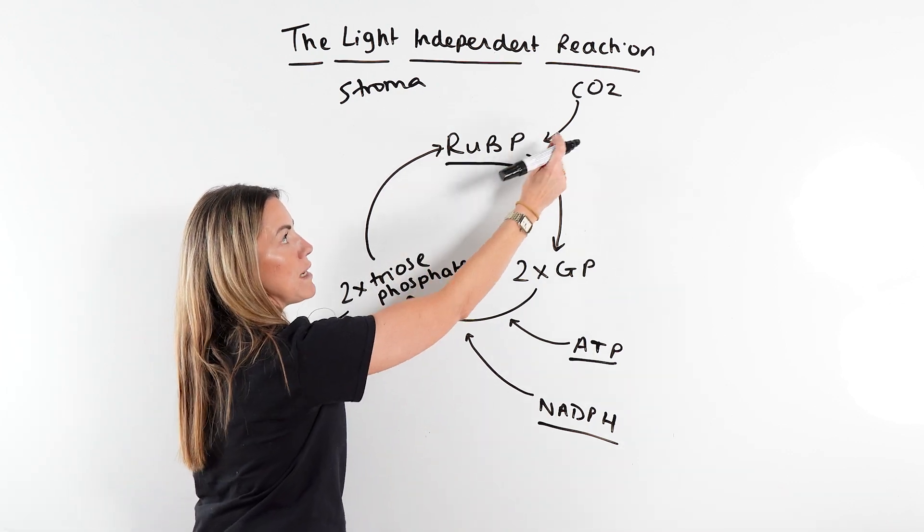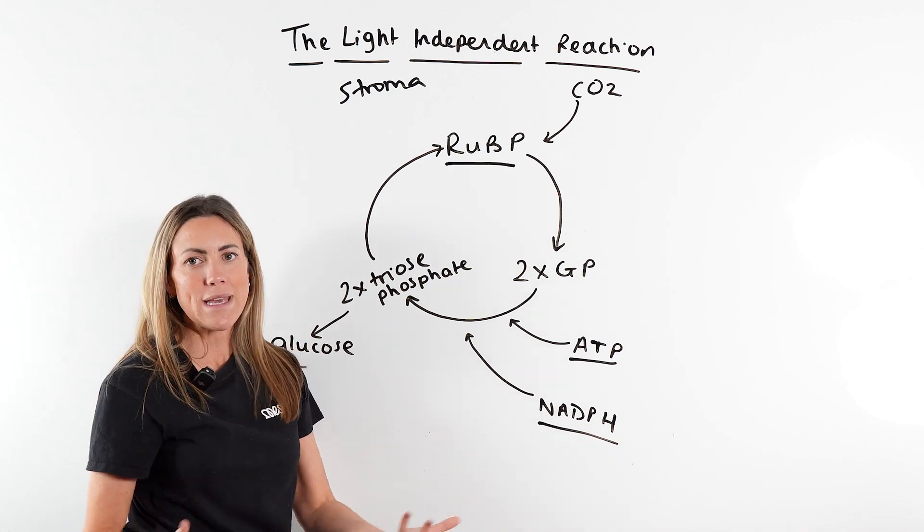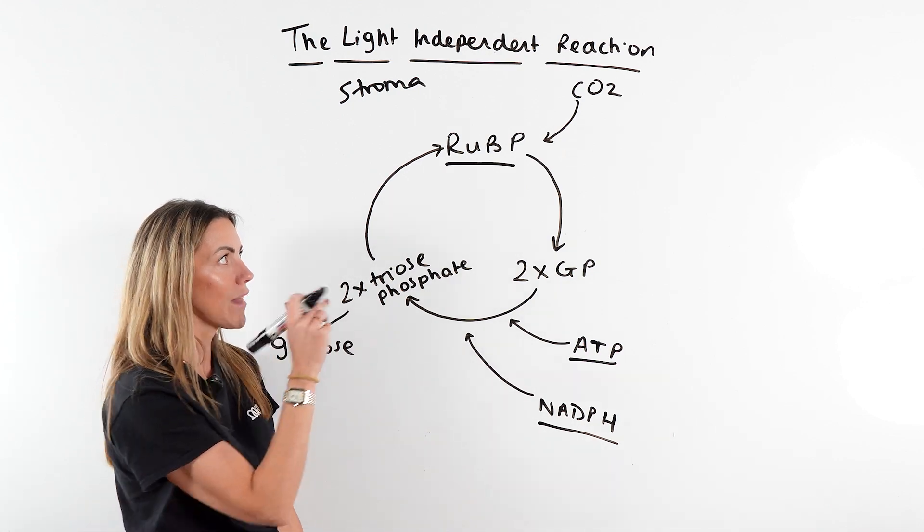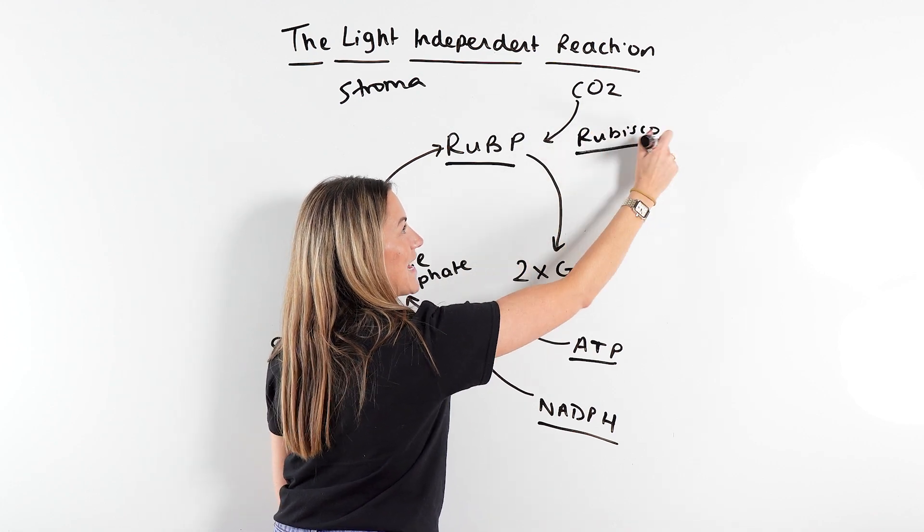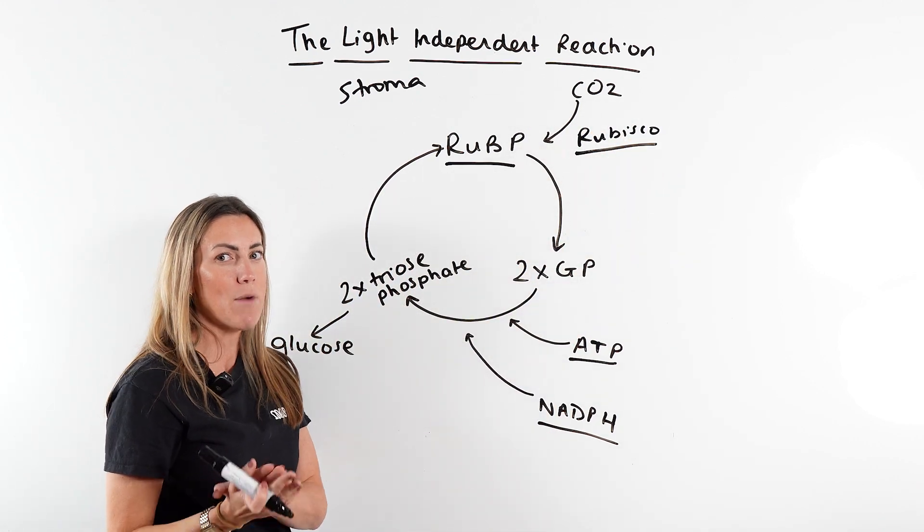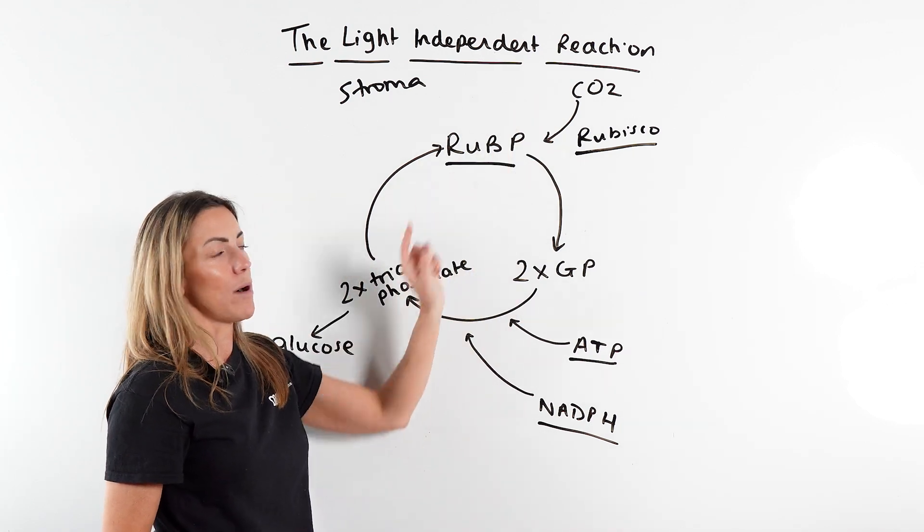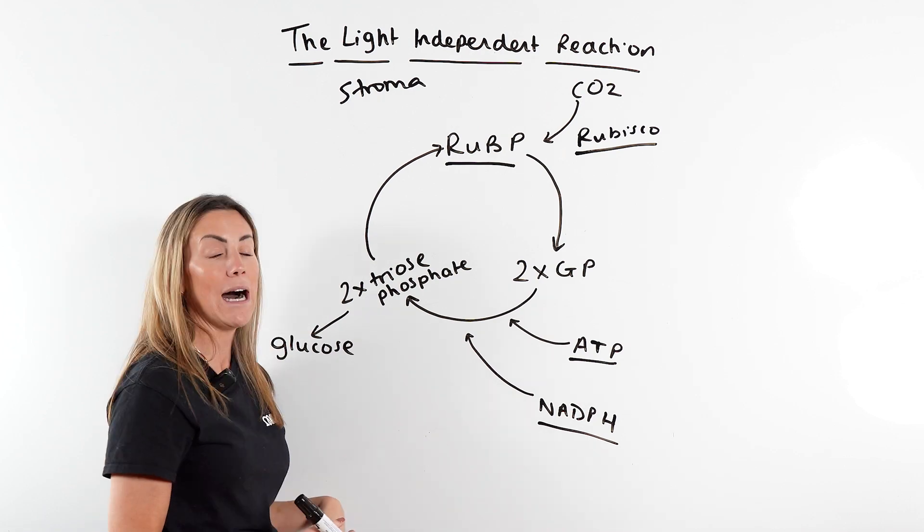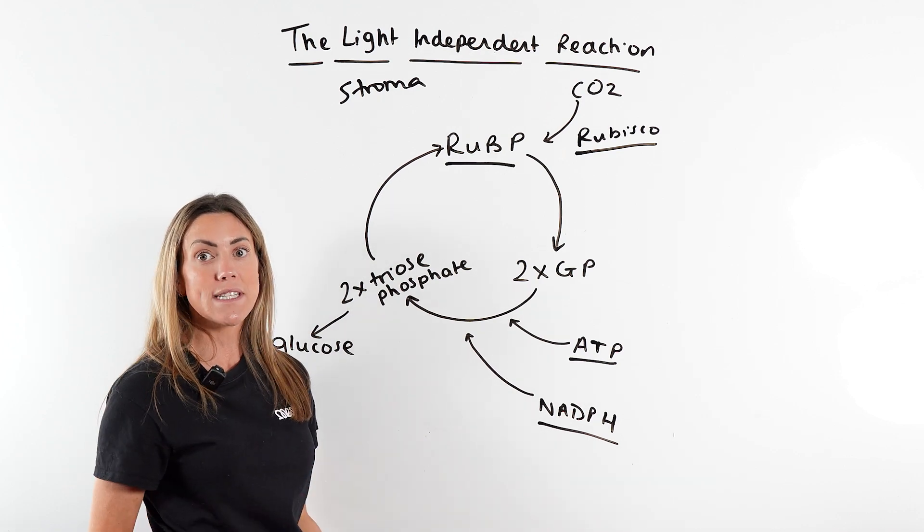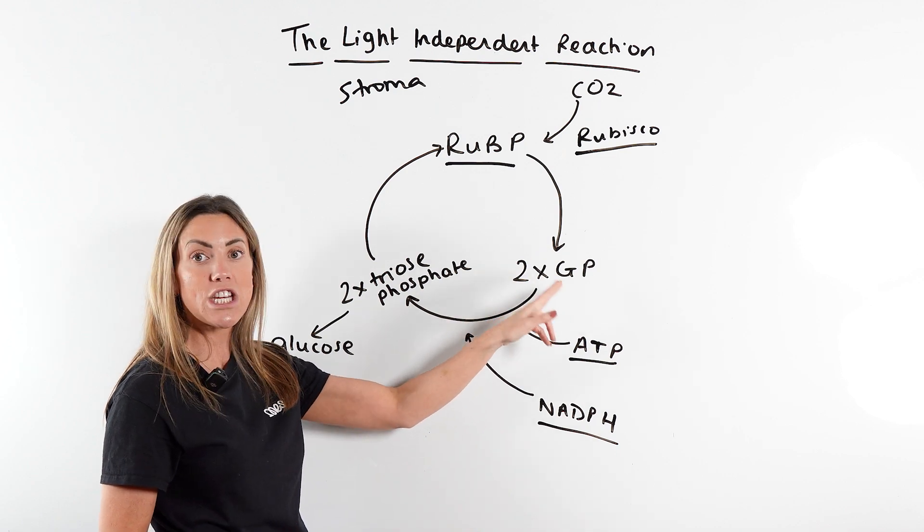You can also say that RuBP is carboxylated or simply RuBP reacts with CO2. This requires the enzyme RuBP and it is important you should know the name of that enzyme. So RuBP catalyzes the carboxylation of RuBP. Now when they join together this gives us a six carbon compound, but it is very reactive and unstable so it immediately splits into two molecules of GP.